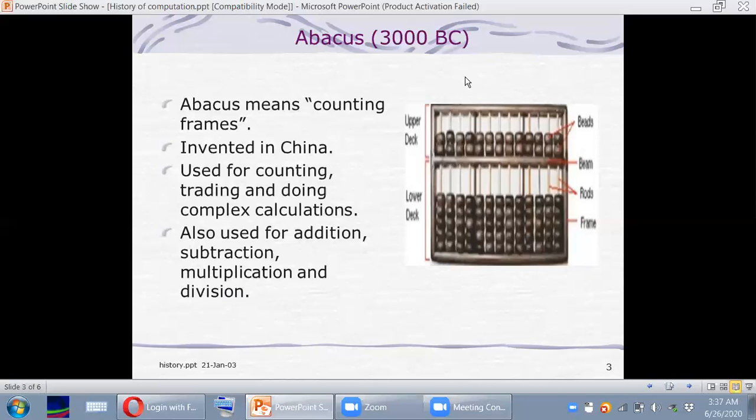Similarly, this device is divided into two main parts. The first part is called the upper deck and the lower part is called the lower deck. The casing of this device is called the frame. This is why it is also called counting frames. The center part of this device is called the beam. So it was used for a very long time for counting, trading, addition, subtraction, and multiplication.